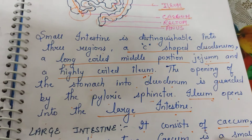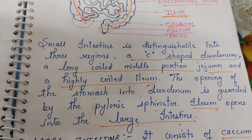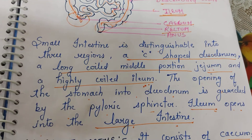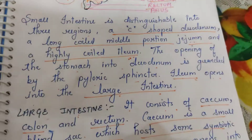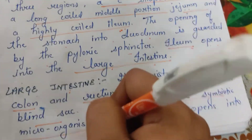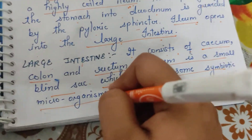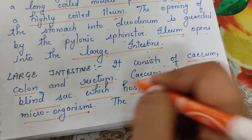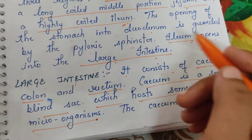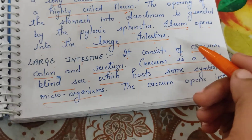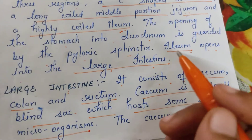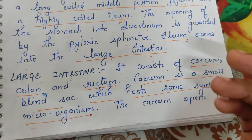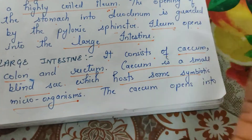The cecum is a small blind sac which hosts some symbiotic microorganisms. Sometimes, if microorganisms like bacteria, viruses, or helminths enter the large intestine, they go and affect it. The cecum becomes the site of infection.